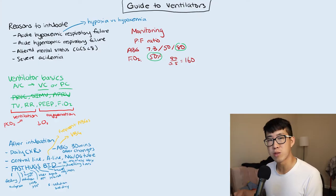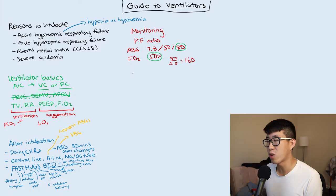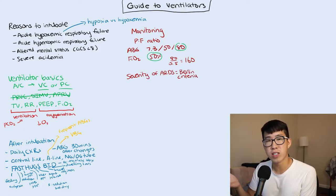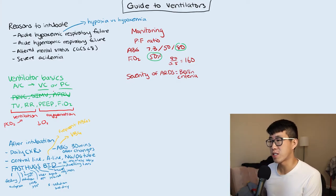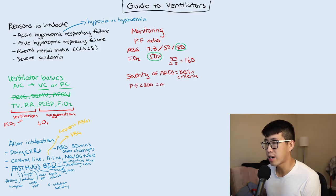The P to F ratio is used with the Berlin criteria to classify ARDS severity. ARDS is defined by respiratory failure within seven days and bilateral pulmonary opacities. A P to F less than 300 is mild ARDS, less than 200 is moderate ARDS, and less than 100 is severe ARDS.